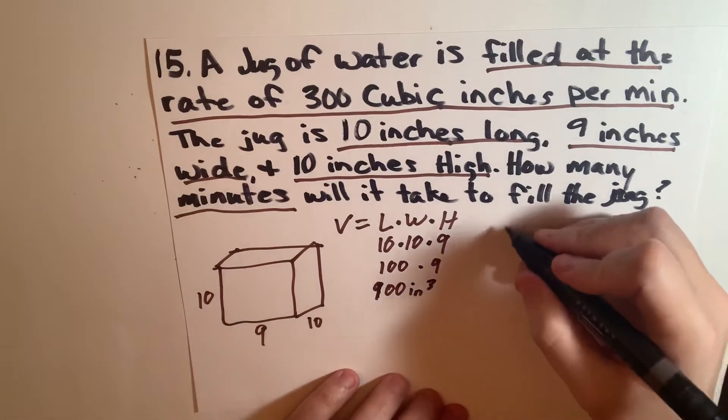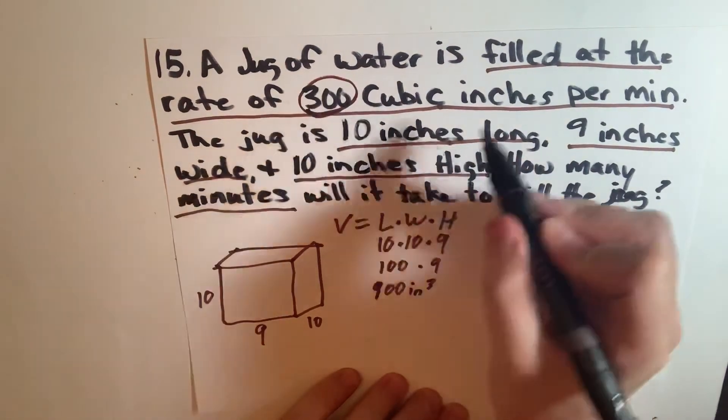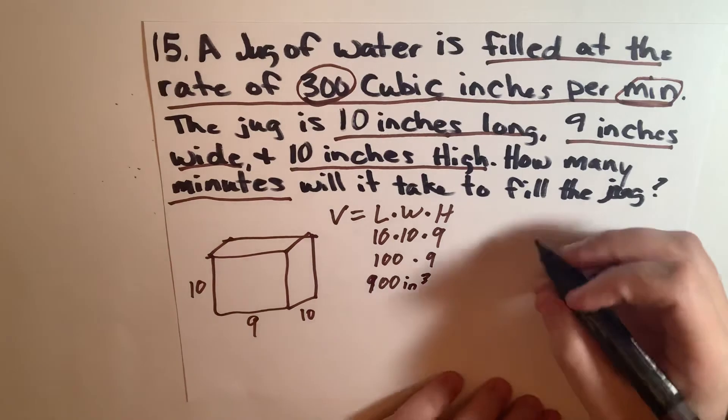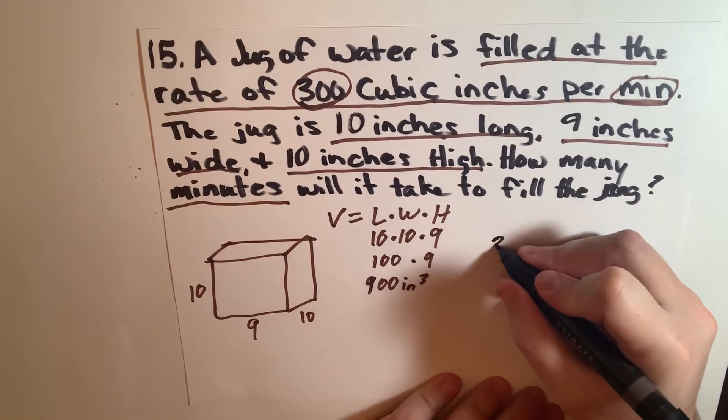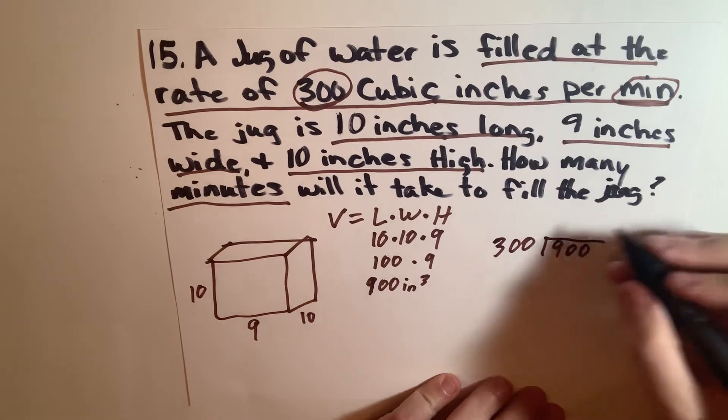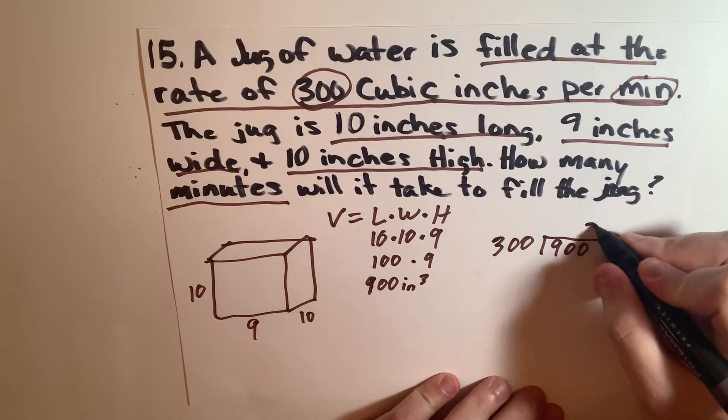Now if it fills up at 300 cubic inches per minute, that means we can divide this. So we have 300 divided by 900 is 3.